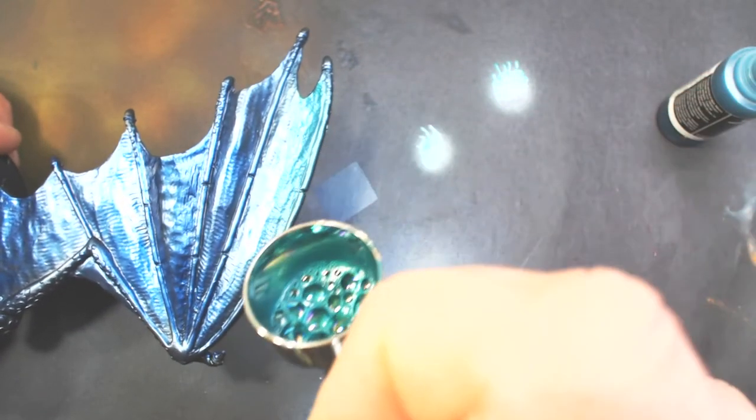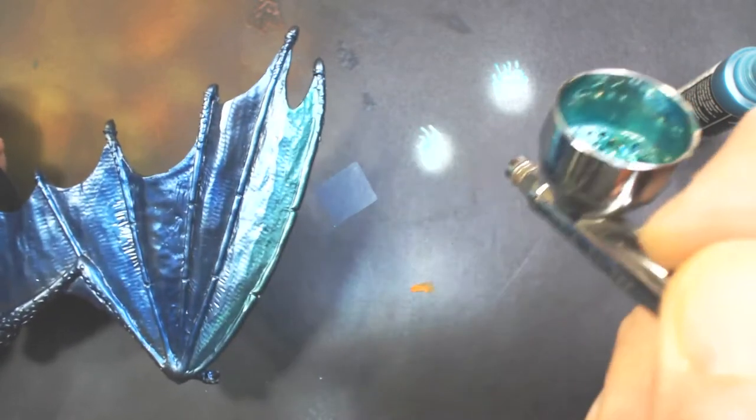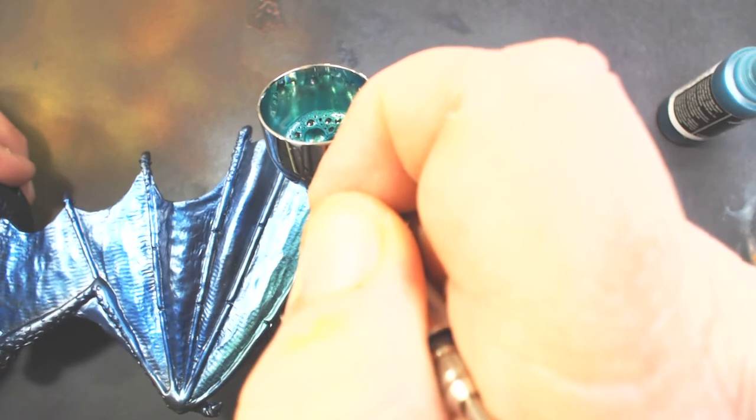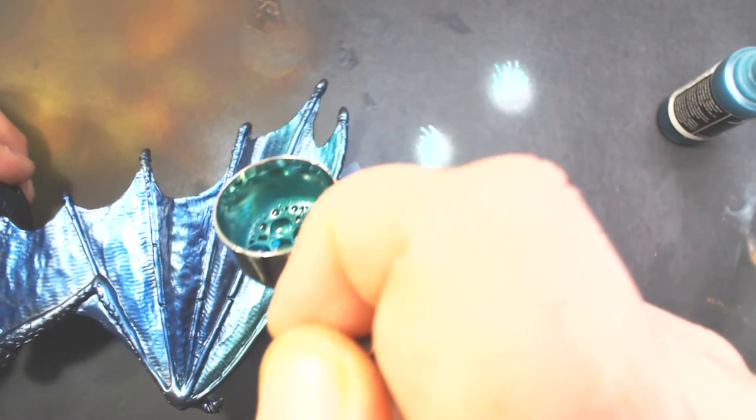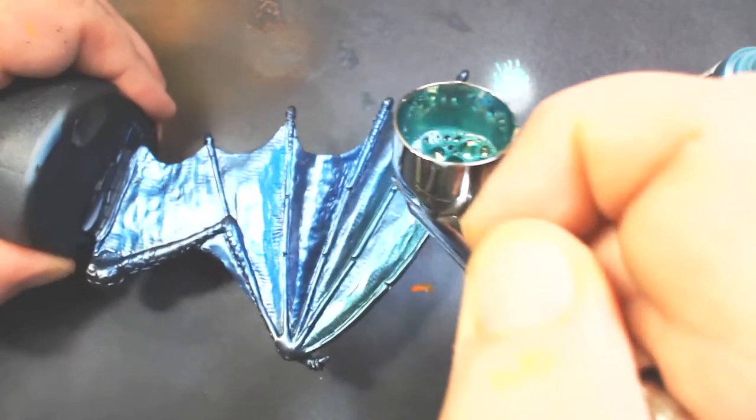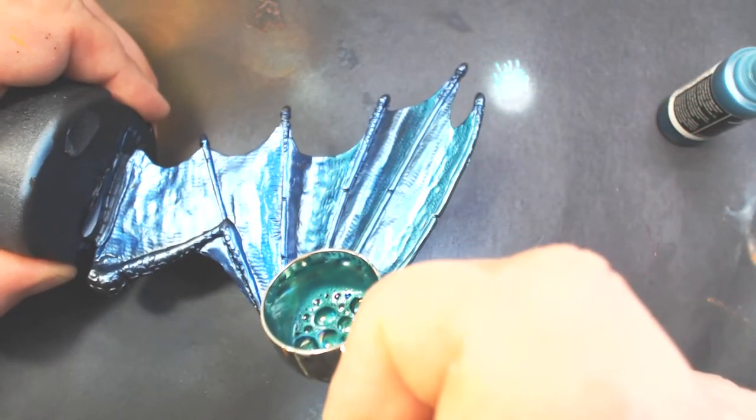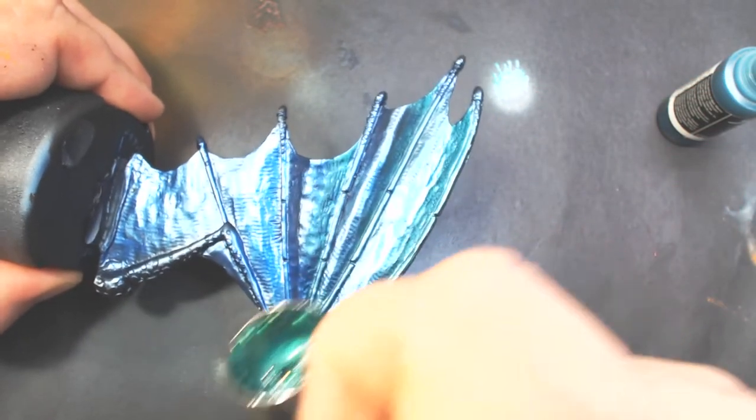It's kind of hard to see because it's very reflective. But this is the exact same technique that I used on the Umber Hulk that I did in one of my previous videos.